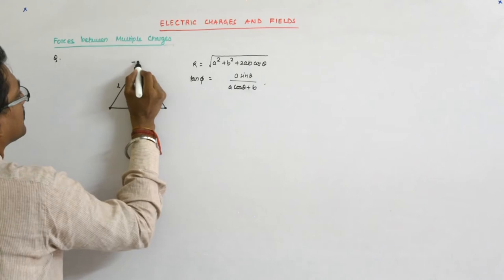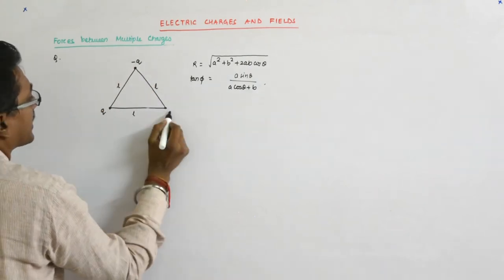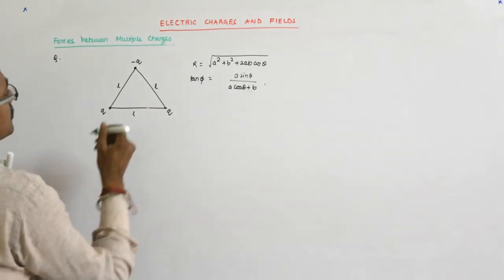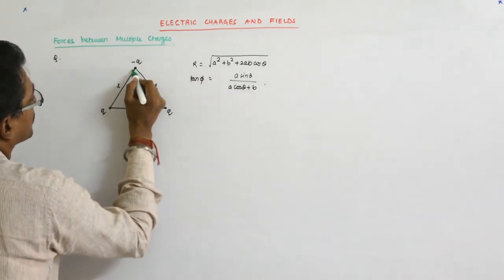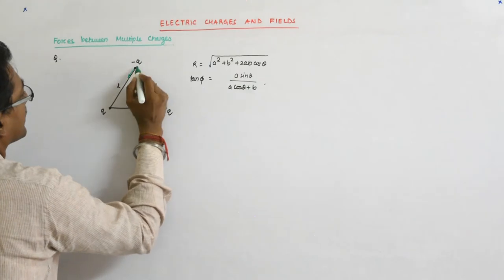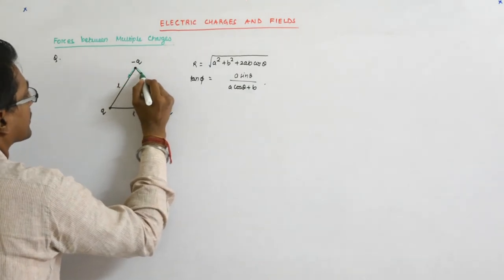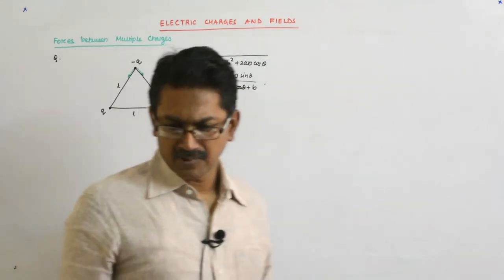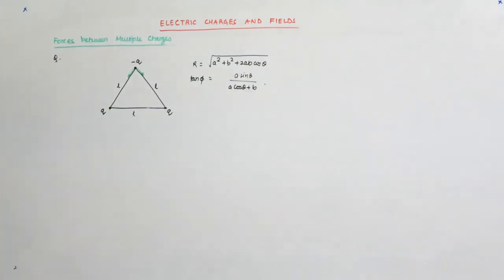Now if this is minus q and this is q and this is q, we first should see what is the orientation of the force such that they are co-initial. So here the force is in this direction, it will be attractive and here it will be in this direction. Incidentally, the magnitude of all the forces will be the same because the interacting charges and their distances are the same.